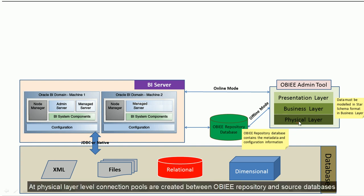At the physical layer level, connection pools are created between the OBIEE repository and the source database. Then the metadata is imported from the source database into the OBIEE repository.